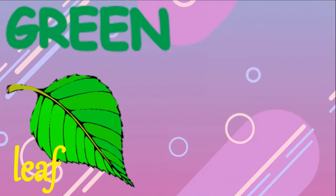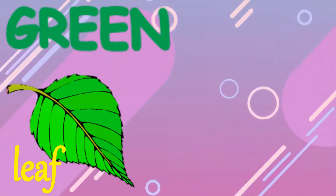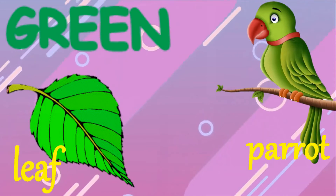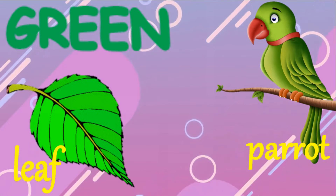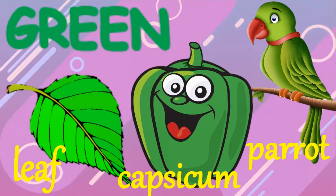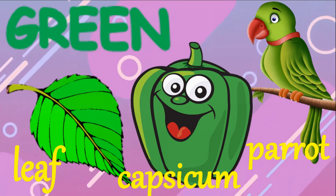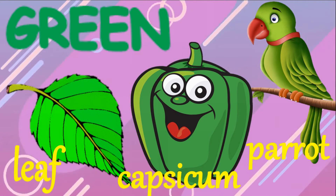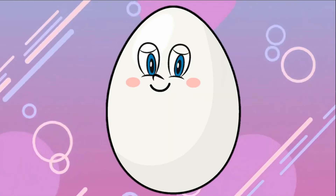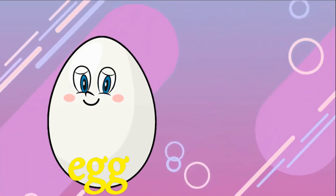Do you know the color of a leaf? Green! What else is green? Parrot — parrot is green. Capsicum is also green in color.